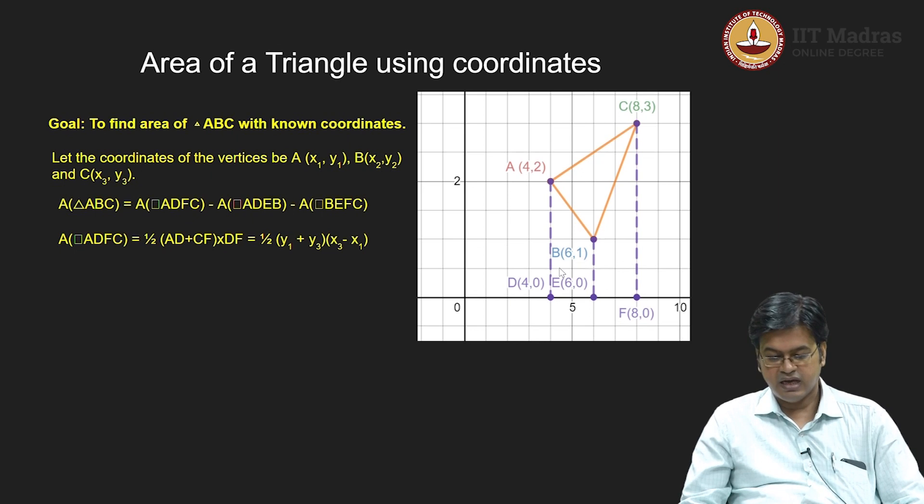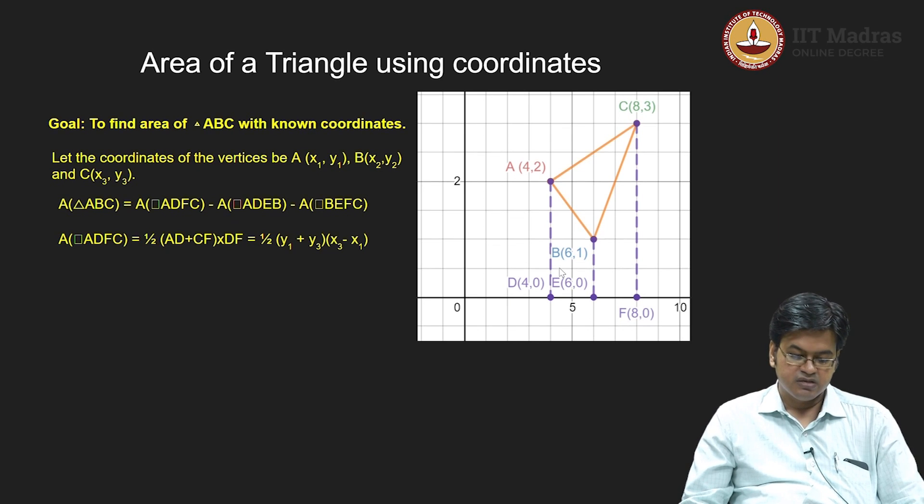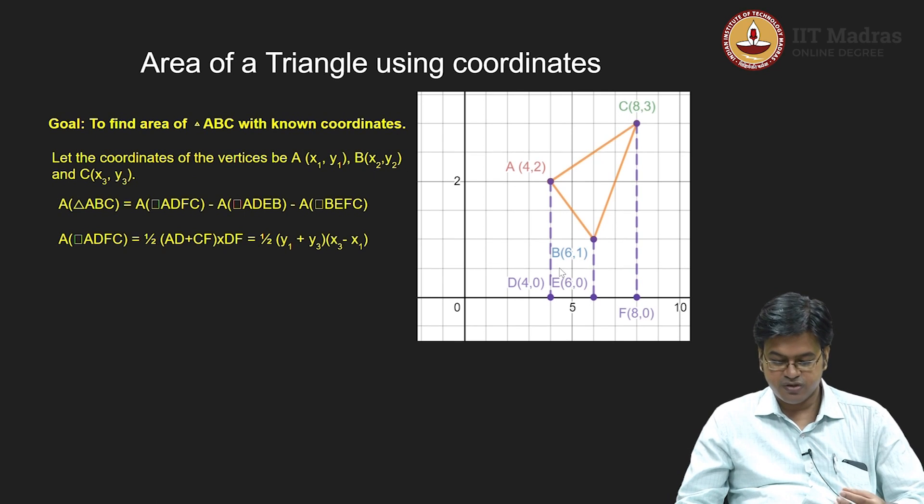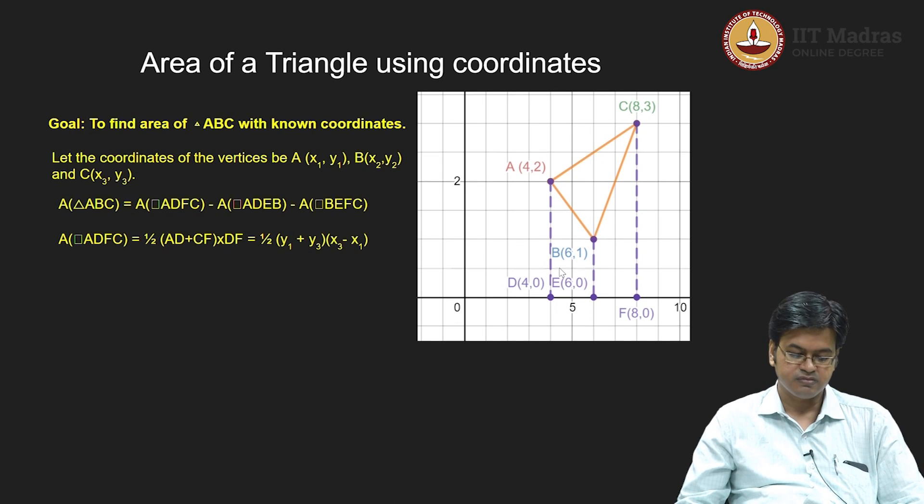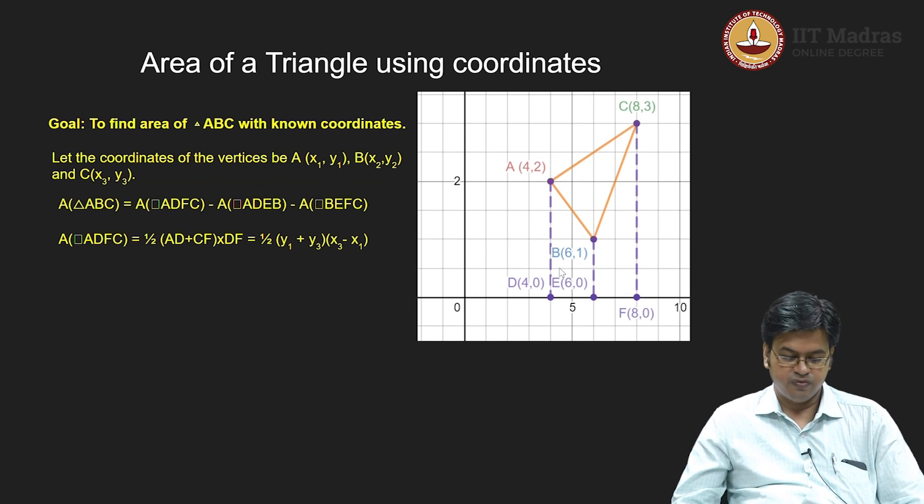What are the coordinates of AD? D will have in our general coordinate system, the coordinates of AD will be: A has coordinates x1, y1 and D is after dropping a perpendicular on x axis, so its y coordinate will vanish and therefore the coordinates of D will be x1 comma 0. So what will be the length of AD? It will be purely in terms of y, that is y1. Similar thing is applicable for CF. So it will be nothing but y3. So half y1 plus y3.